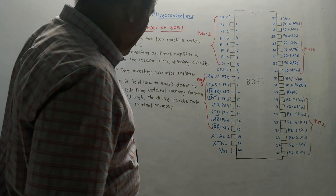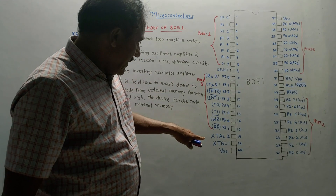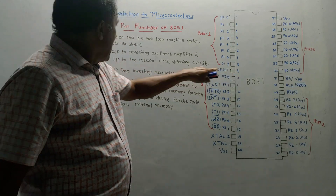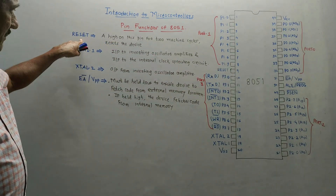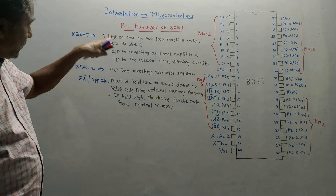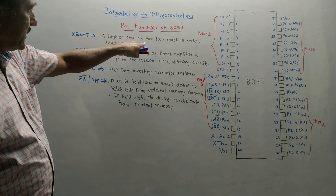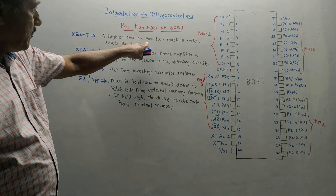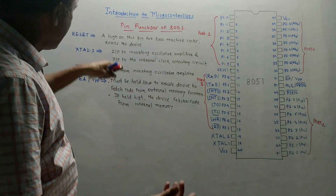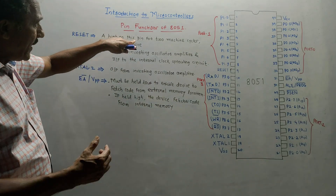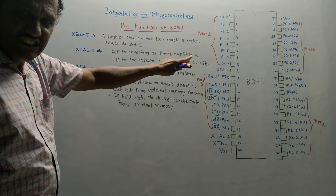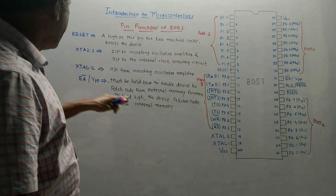The next pin is Reset, which is pin number 9. As the name indicates, if you supply logic high on this pin for two machine cycles — obviously when the oscillator is running — then it resets the entire device.